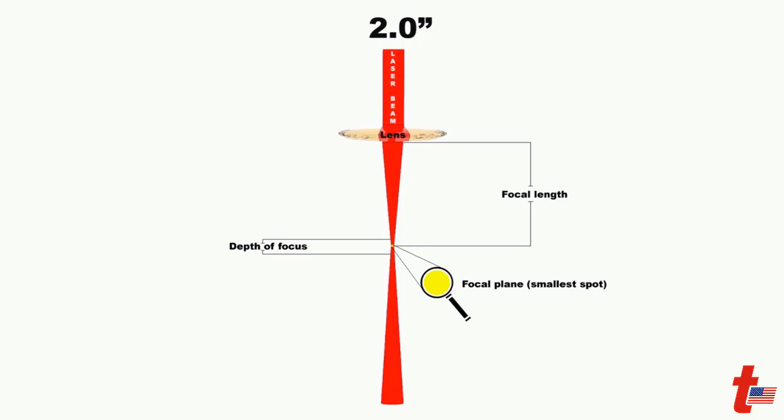So, for the 2 inch lens, the depth of focus is an average of plus minus 1.5 mm, so a total range of 3 mm.